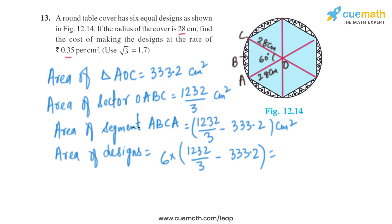So basically the area of segment ABCA is the area of one of the designs. As there are six designs, we'll just multiply it with six, so we'll get the area of the designs as 464.8 square centimeters.